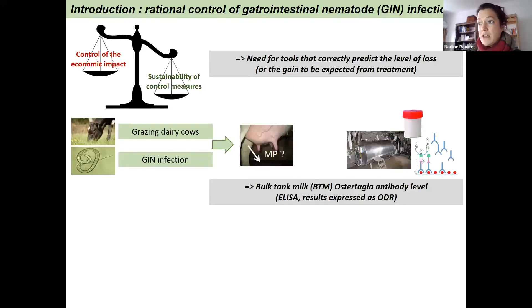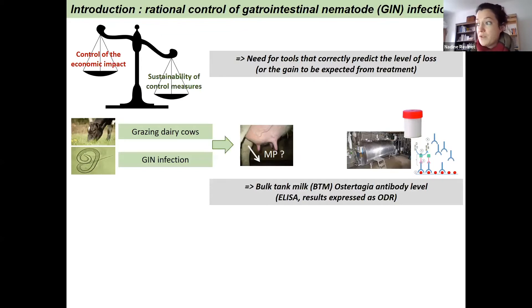In the particular case of grazing dairy cows, we know that this infection can induce milk production losses, and there is a very easy-to-use tool available in the field: the Sartaja ELISA, which measures the bulk tank milk Ostertagia antibody level with results expressed as optical density ratio, or ODR.